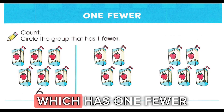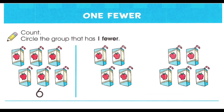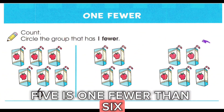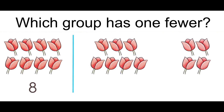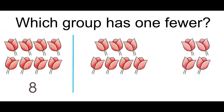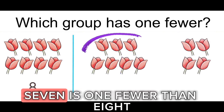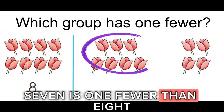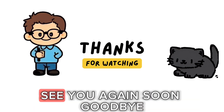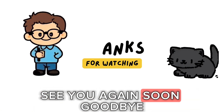Which has one fewer? Five is one fewer than six. Which group has one fewer? Seven is one fewer than eight. All right everyone, that's the end of this video. See you again soon, goodbye!